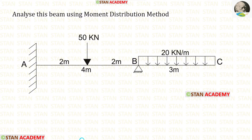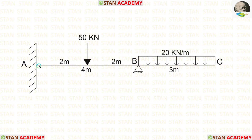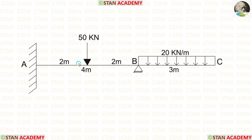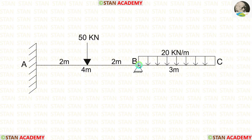Before analyzing, let us see the beam. In this beam, there is a span AB and also an overhanging span BC. In span AB, there is a point load of 50 kN acting at the center. In the overhanging span BC, there is a uniformly distributed load of 20 kN per meter.